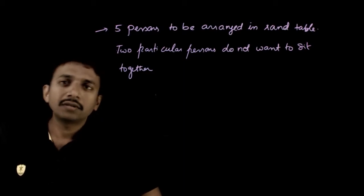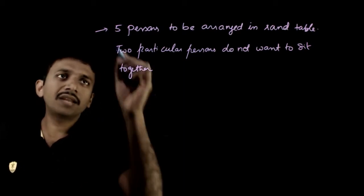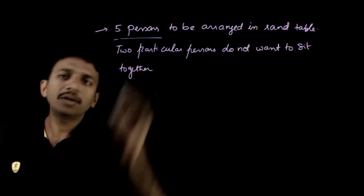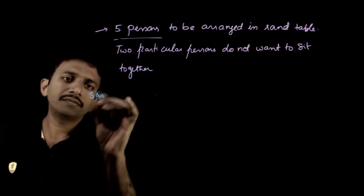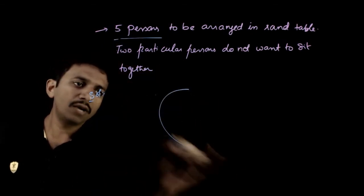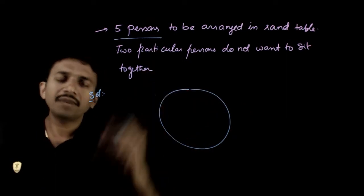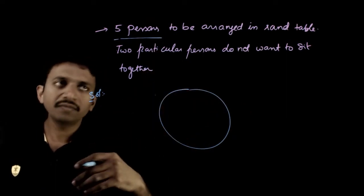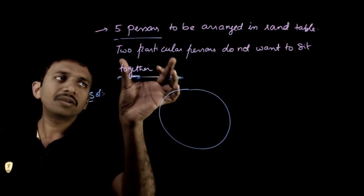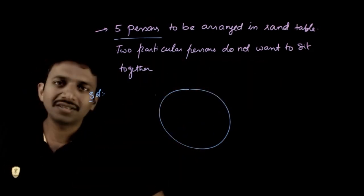Welcome students. This question asks: there are five persons who are to be arranged on a round table. So there's a round table and these five persons have to be arranged. But the condition is two particular persons do not want to sit together.